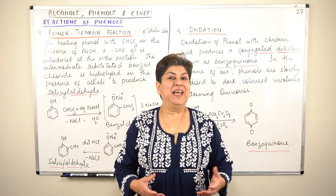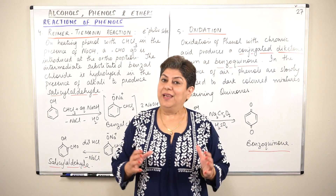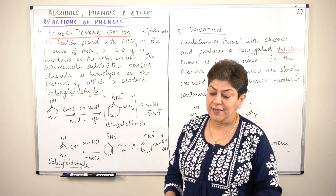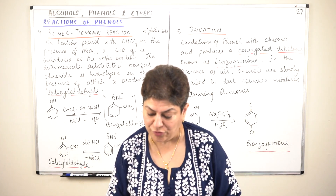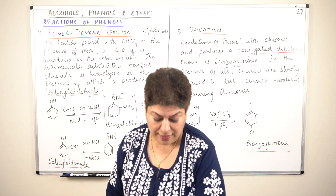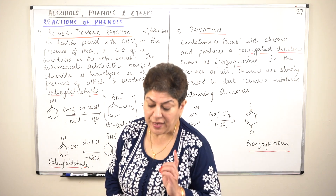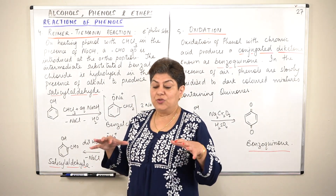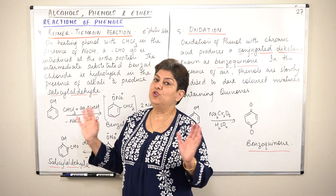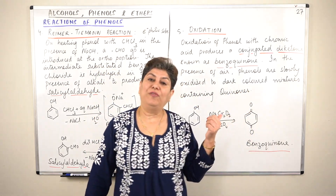Hello, I am Seema and welcome to part 27 of the chapter Alcohols, Phenols and Ethers. In the past few videos I have been telling you about the reactions of phenols. In the past three videos we started with electrophilic aromatic substitution of phenols, in which we did nitration and halogenation. Then in the previous video I did Kolbe's reaction and reaction of phenol with zinc dust. This is going to be the last video on this topic, and it will have two reactions: the Reimer-Tiemann reaction and the oxidation of phenol.